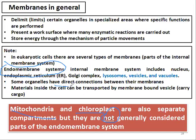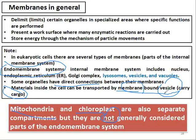Some organelles have direct connections between their membranes, and material inside the cell can be transported by membrane-bounded vesicles that carry the cargo. For example, there are things in the cell coming from the nucleus to the Golgi via vesicles. These vesicles are made of membrane and they carry the cargo — the host material that is transported from one organelle to another inside the cell.